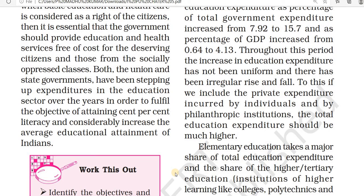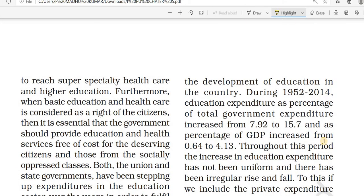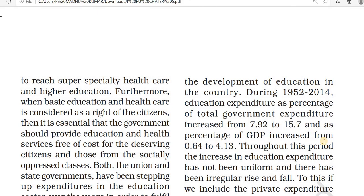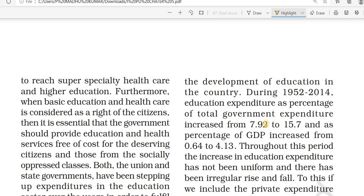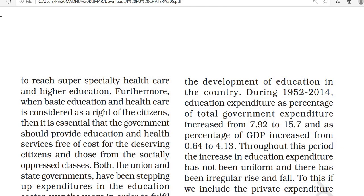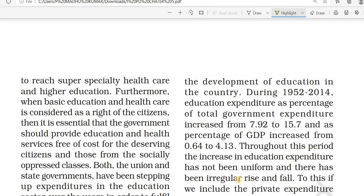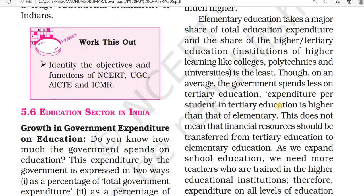The difference between male and female literacy rates also needs to be reduced. India's unemployment rate is high, and to reduce it, more money needs to be allocated to education. Government expenditure on education has increased from 0.64% to 4.13%, and further increases are needed. Increasing expenditure on education plays an important role, especially in elementary and basic education, though investment in higher education institutions remains comparatively less.